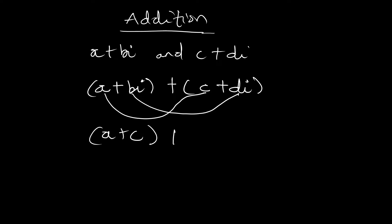So we get b+d, and since this is the imaginary part, we bring in the i. So we get (a+c) + (b+d)i. This is how we add complex numbers. Now let's take an example.